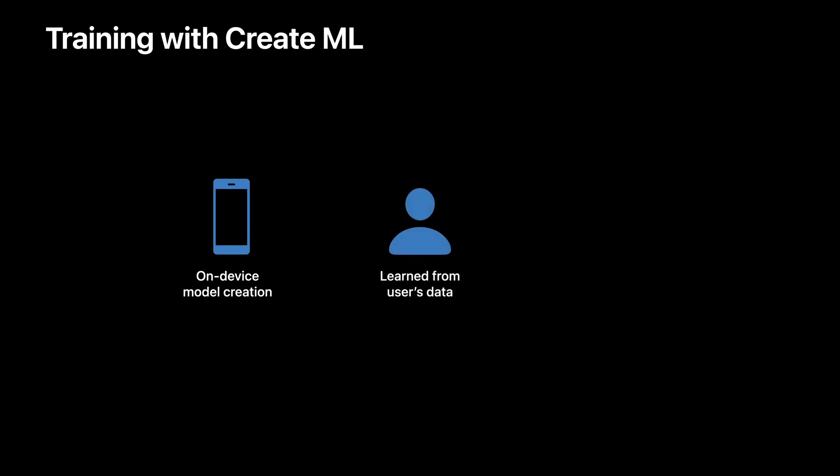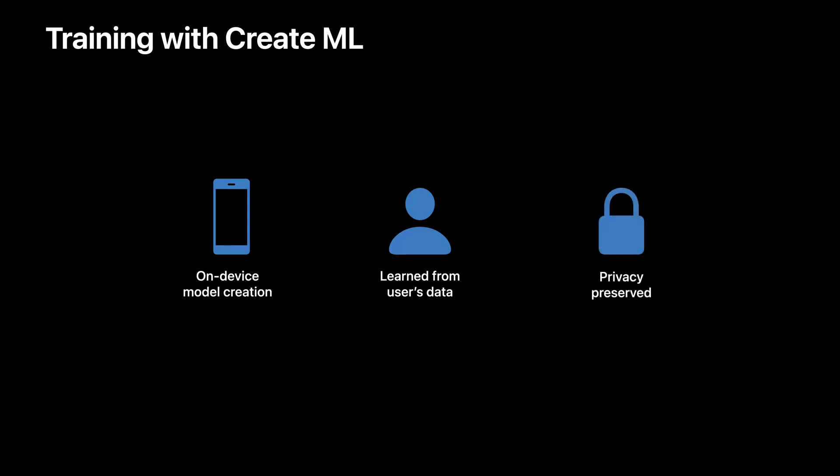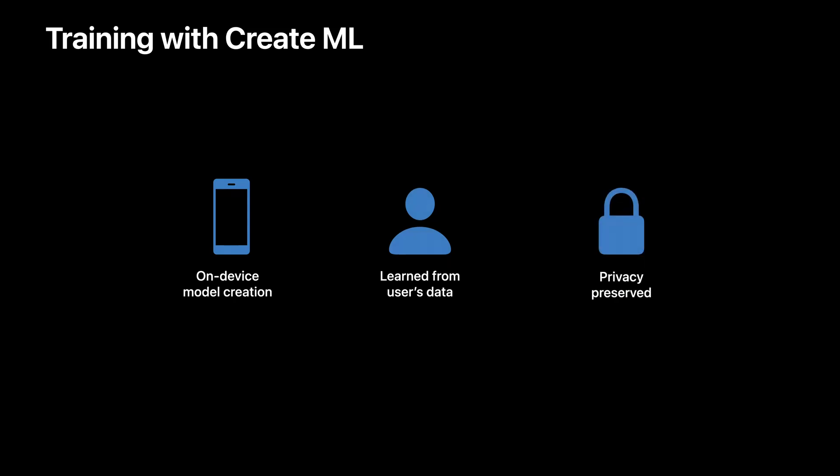In other words, you can access programmatic APIs directly from your application for on-device model creation. It gives your app the capability to learn from and thus adapt to your users. Last but most importantly, user data never has to leave their devices, so user privacy is preserved.